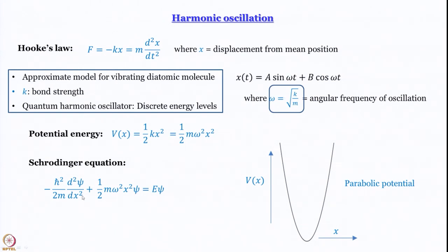The first term remains the same — the kinetic energy term — and the potential energy term becomes ½mω²x²ψ = Eψ. The beauty of the Schrödinger treatment of quantum mechanics is that you start with classical quantities, and when you try to interpret the wave functions, the unique features of the quantum world manifest themselves automatically. That is what will happen here as well.